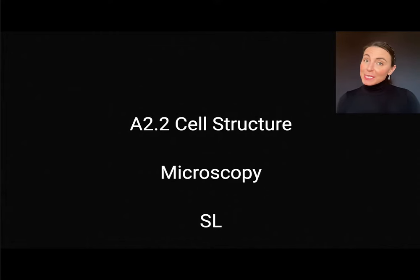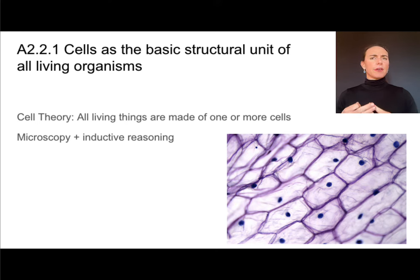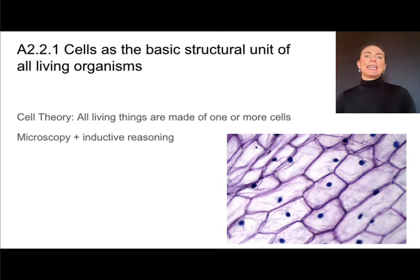In this video, we'll discuss the microscopy parts of A2.2 on cell structure, and this is part of the standard level or core content. Part of the cell theory says that all living things are made up of one or more cells. Scientists came up with this by looking at lots of different types of samples — plants, animals, fungus, lots of organisms — underneath microscopes, and all of them had these small units called cells. So through inductive reasoning, we can confidently say that all living things are made of cells.